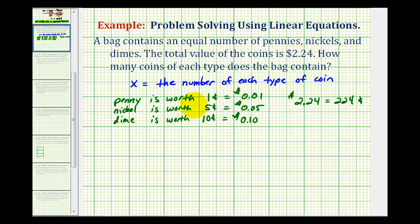So we're going to write an equation where we have the value of the coin times the number of coins, and the total sum is going to be equal to 224 cents. So we'll have 1 cent times x. This represents the total value of pennies, plus 5 cents times x. This would be the value of the nickels.